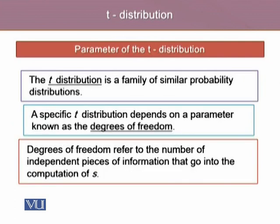The T-distribution is a family of similar probability distributions. A specific T-distribution depends on a parameter known as the degrees of freedom. Degrees of freedom refer to the number of independent pieces of information that go into the computation of the standard deviation, S.